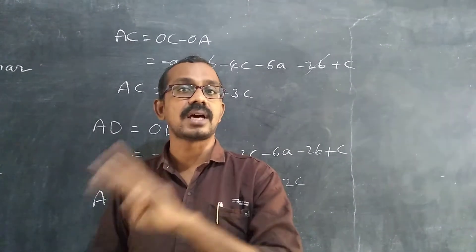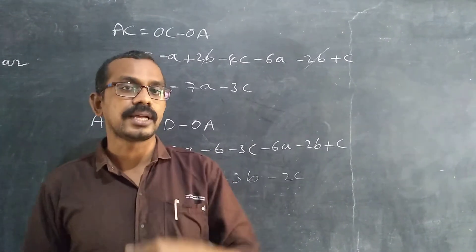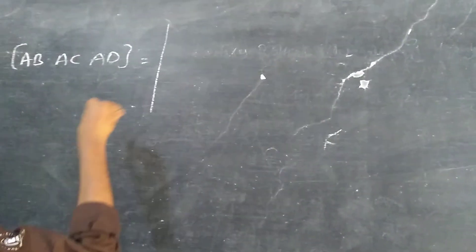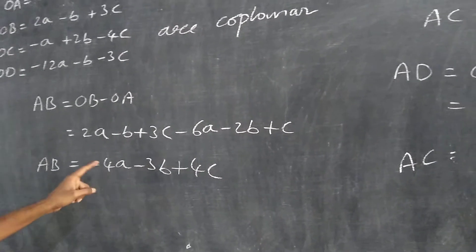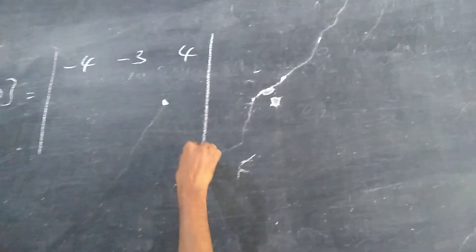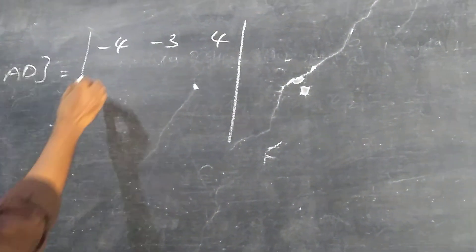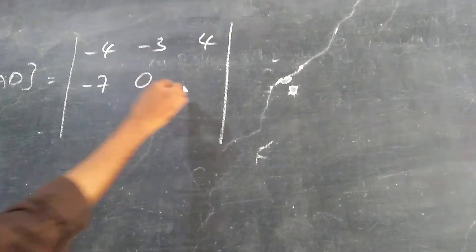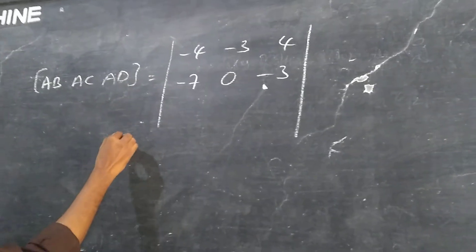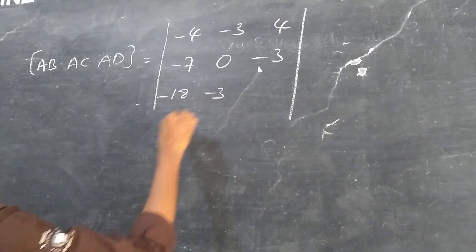We have 3 vectors AB, AC, AD. Now find the determinant of AB, AC, AD. AB coefficients are: a coefficient minus 4, b coefficient minus 3, c coefficient 4. So first row is minus 4, minus 3, 4. AC value: minus 7a, b value is 0, c value minus 3. AD value: minus 18, minus 3b, minus 2. Set up the 3x3 determinant with these values.